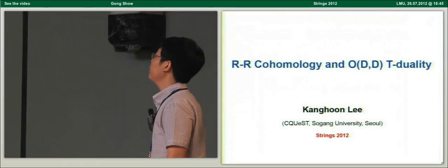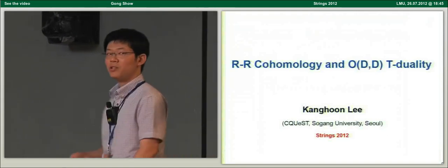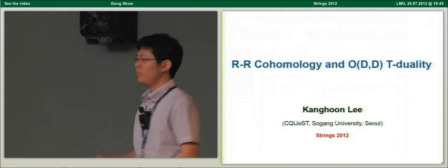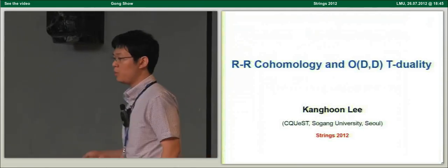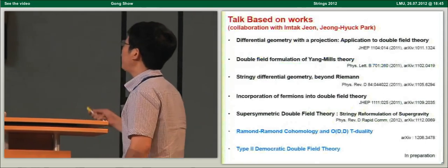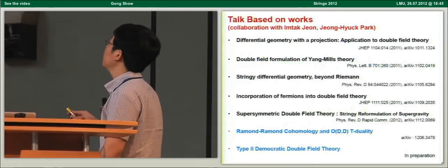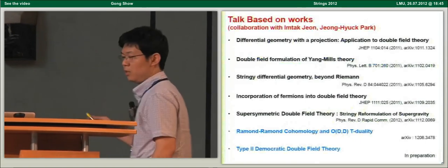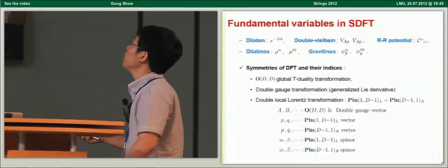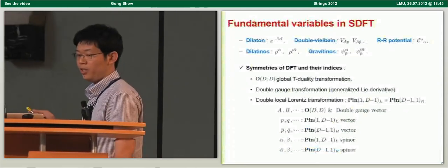I'm Kang-Hoon Lee from SCAST in Southern University. In this talk, I'll show how to incorporate the R-R sector into double field theory in a compatible manner with supersymmetrics. This is based on papers with Ni-Jeon and Jung-Hyeok Park. I'll focus on the last two papers.